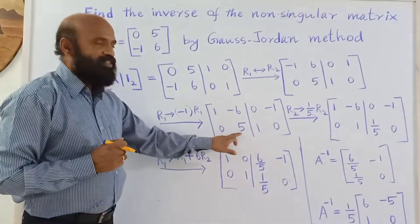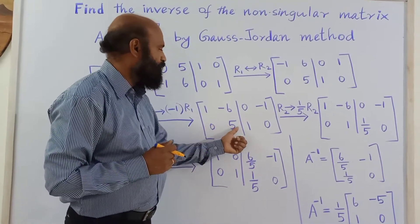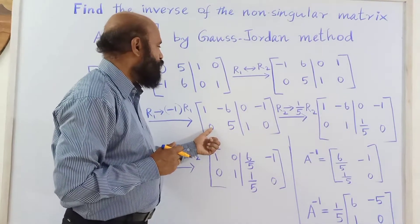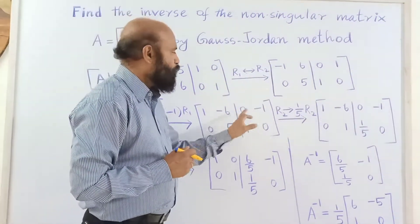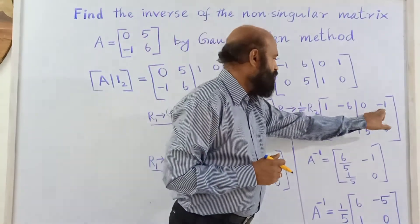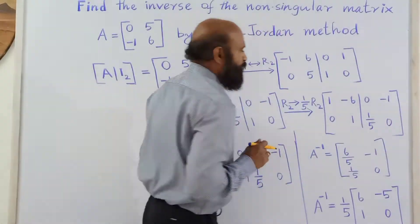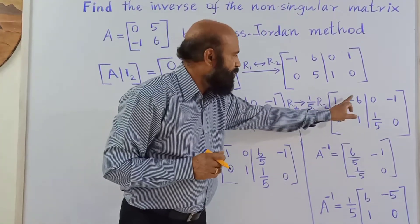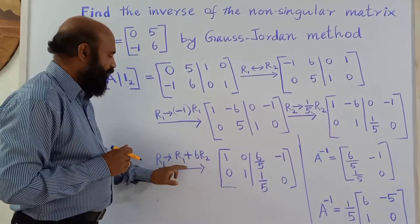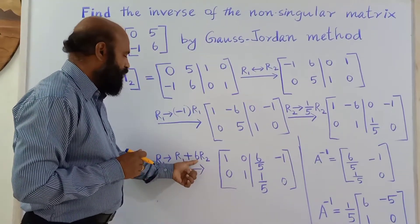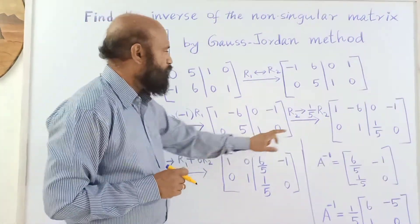Next, we need a 1 in the second diagonal position. Multiply the second row by 1/5: 0 × (1/5) = 0 and 5 × (1/5) = 1. Apply the same operation to the identity side: the second row becomes [1/5, 0]. Next, to make the (1,2) element zero, multiply the second row by 6 and add it to the first row: the (1,2) element becomes −6 + 6 = 0.